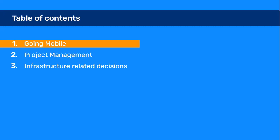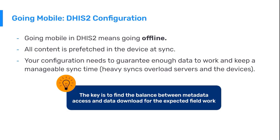Let's start with the implications of going mobile in terms of server configuration and security. The main advantage of using a mobile device in an implementation is the capability of capturing data offline. Internet connection is only needed for an initial data and metadata download and also to send the collected data to the server. Keep in mind that heavy syncs can overload the servers and the devices, so it is necessary to configure a manageable sync time.